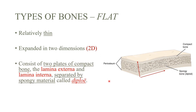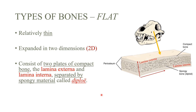Flat bones consist of two plates of compact, or hard, bone. One is the lamina externa, which is on the outside, and the lamina interna, which is on the inside. These are separated by a spongy material called the diploe — it's basically like a sponge, it even looks like one, though it's not as soft. You can find these bones in the skull.